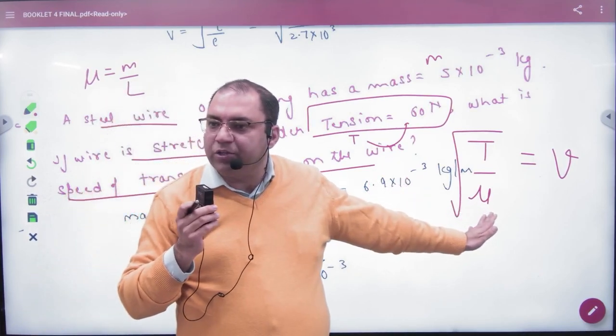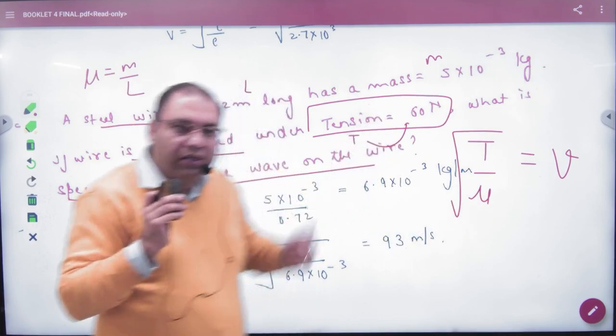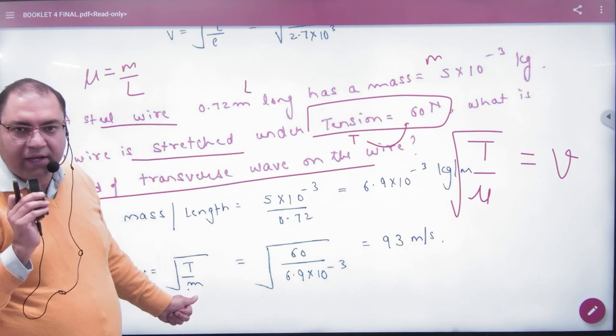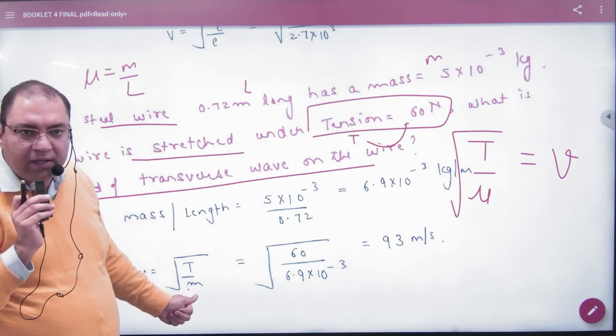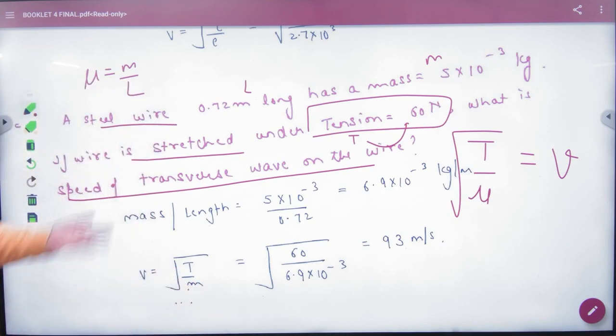Mu ka matlab kya hai: mass per unit length. To nikaal loge mu equals mass upon length. Kai books yaha par m likhti hain, please lekin wo specify karti hain. M ya mu ek hi baat hai, yaha par m ka matlab mass nahi hai, mass per unit length hai. To maine waise na mu kar diya, mu better hai, confusion nahi hoti mass aur mu mein.